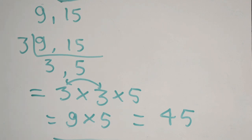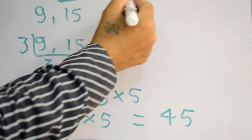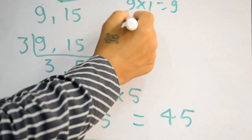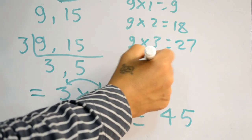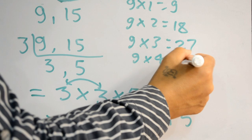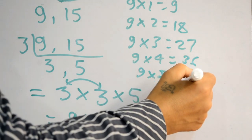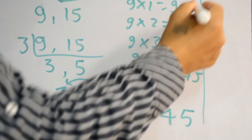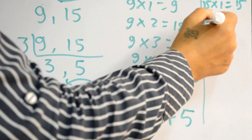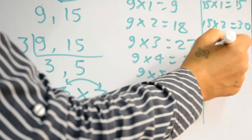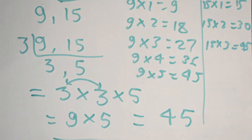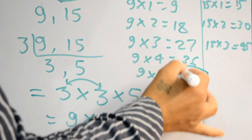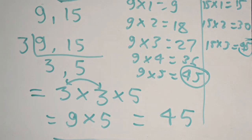So 45 is the Lowest Common Multiple of 9 and 15. The multiples of 9 are: 9, 18, 27, 36, 45. The multiples of 15 are: 15, 30, 45. Among these, 45 is the common multiple of 9 and 15.